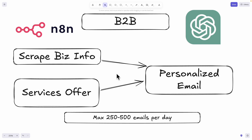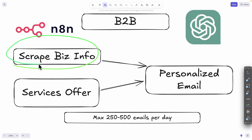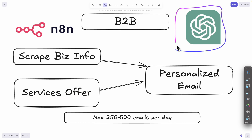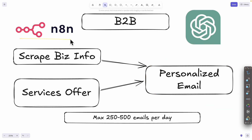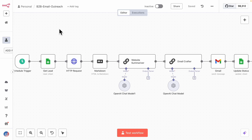For B2B outreach, we first scrape the business website to look for information that helps us understand their business problems. We then list out all the services we offer and pass that information to GPT or a large language model to write a personalized email. We use n8n to automate the whole process so our email outreach runs on autopilot.